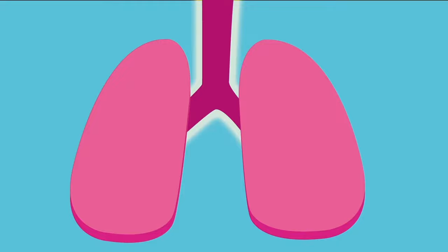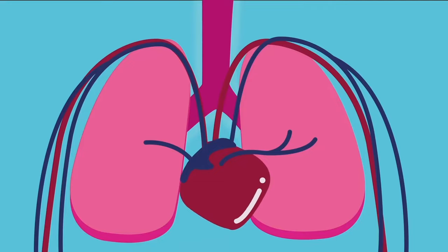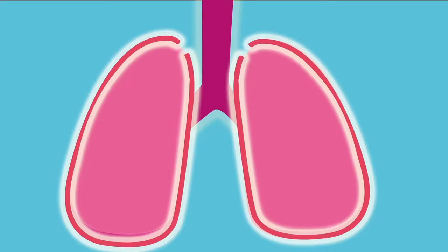The lungs are rich in blood supply and an active site of gaseous exchange. The left lung consists of two lobes, while the right one consists of three. Each lung is enclosed within the pleural membrane.